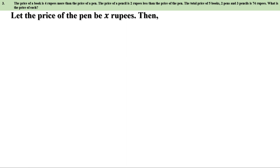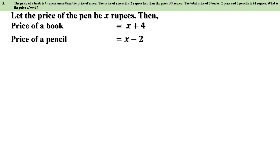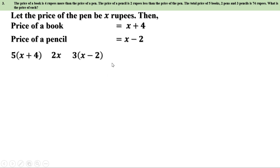Price of a book = x + 4 rupees. Price of a pencil = x − 2 rupees. Price of 5 books = 5(x + 4). Price of 2 pens = 2x. Price of 3 pencils = 3(x − 2). Total = 74 rupees, so: 5(x + 4) + 2x + 3(x − 2) = 74.